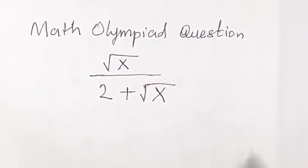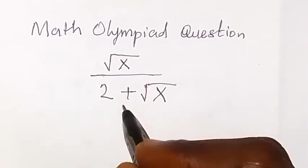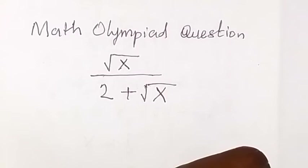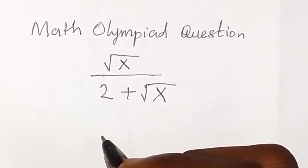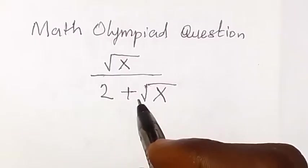Here now, this is in form of a surd. We have the root of a number here. So let's multiply by the conjugate of the denominator. The conjugate of the denominator here will be 2 minus root x.